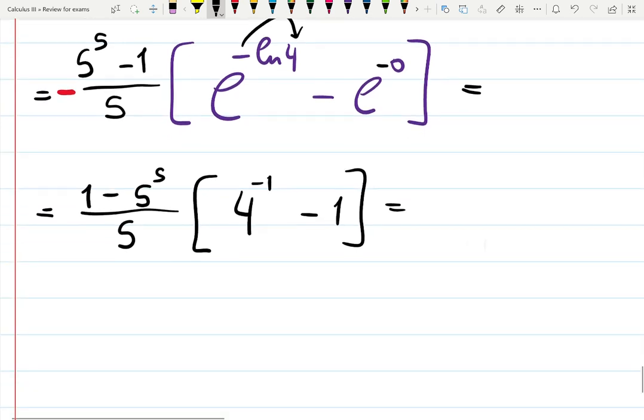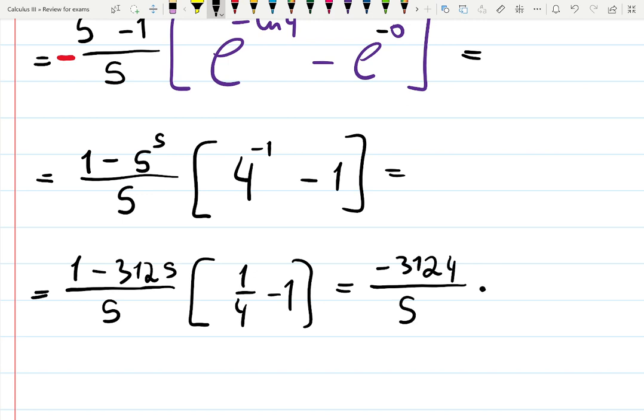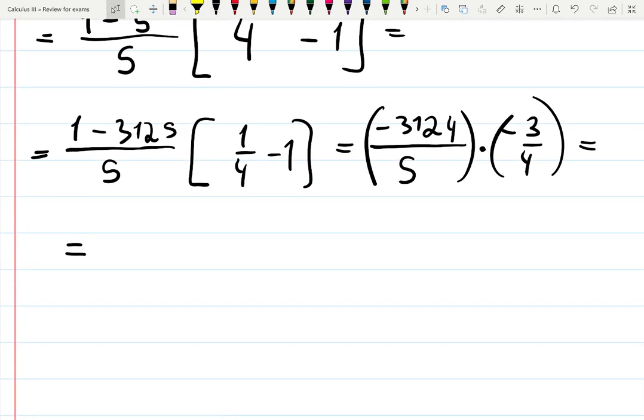Final answer will be 1 minus 3125 over 5. Let me check if it simplifies, divided by 5, no not really. 1 quarter minus 1, which is minus 3124 over 5 times 1 quarter minus 4 quarters is minus 3 quarters. This one actually simplifies pretty nicely, minus and there's minus, let me not do it here, I'll just put plus over here.